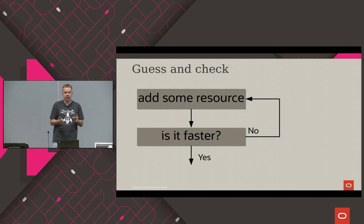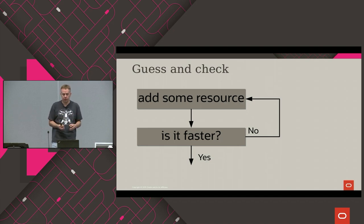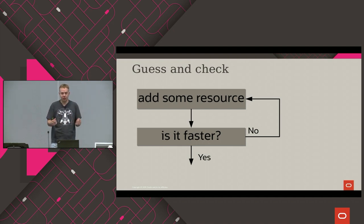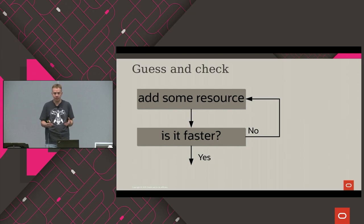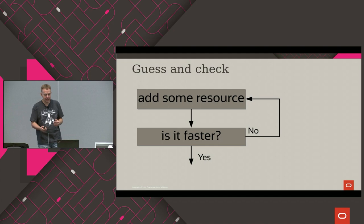There are several strategies to understand what resource needs to be added to improve performance — which is most limited. The most frequent, but not useless strategy: just guess and check. Add it and check your performance. Like: I have a machine with a free CPU slot. I install a new CPU socket and check performance. Sometimes it's quite easy compared to digging through logs and analysis.